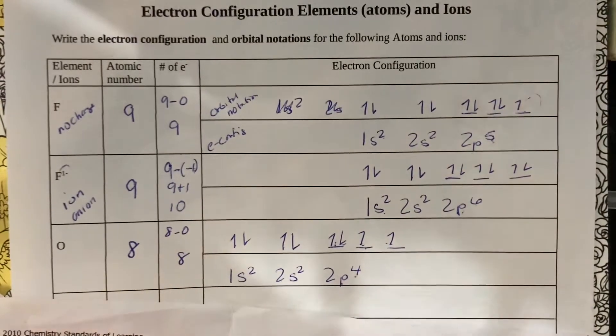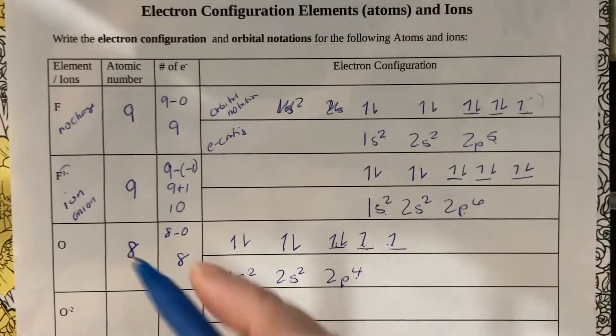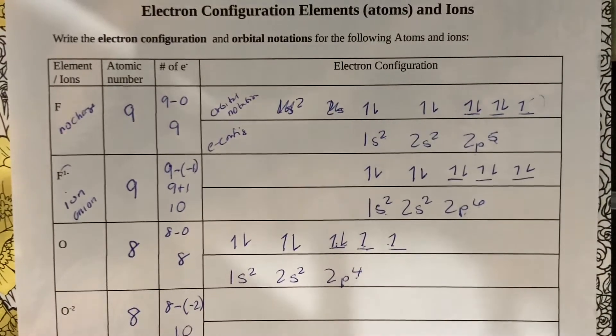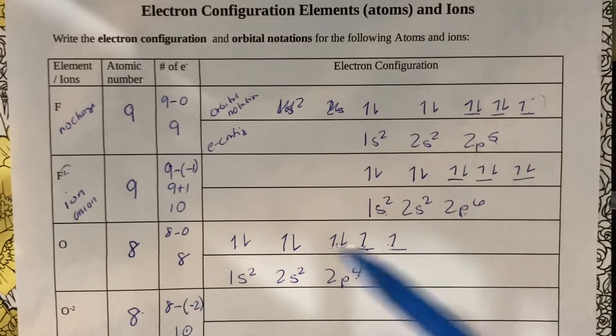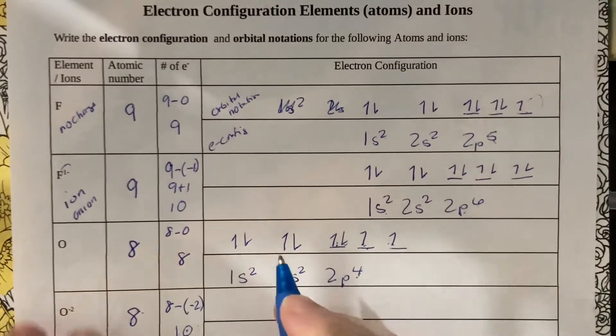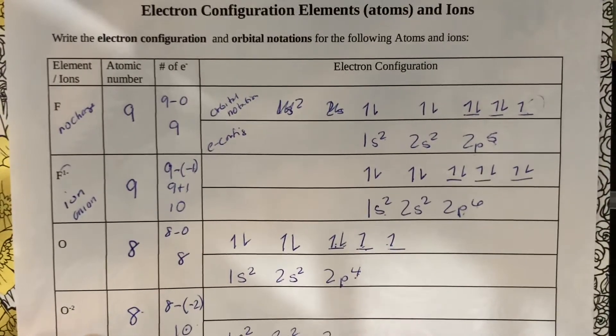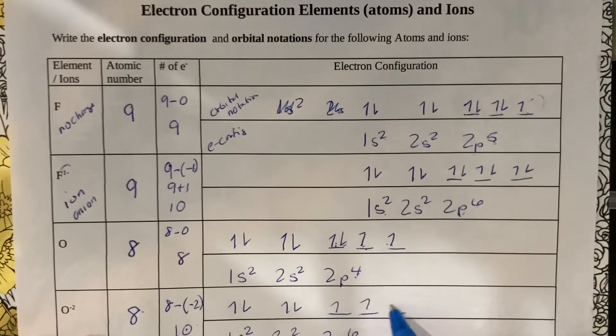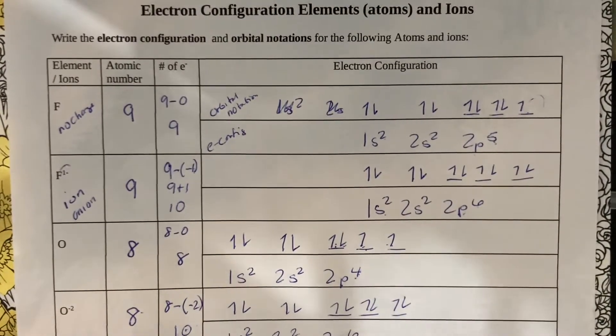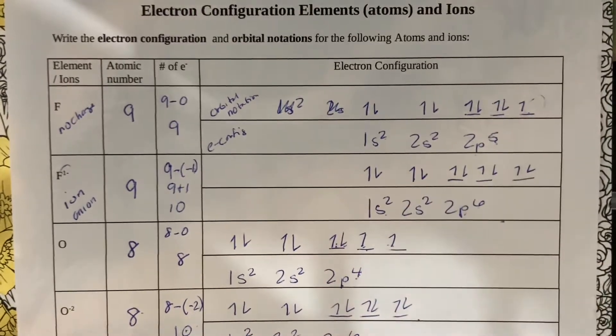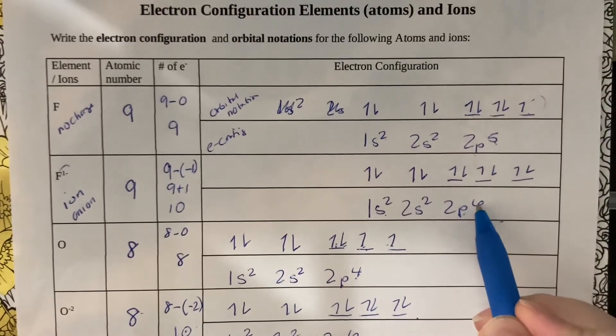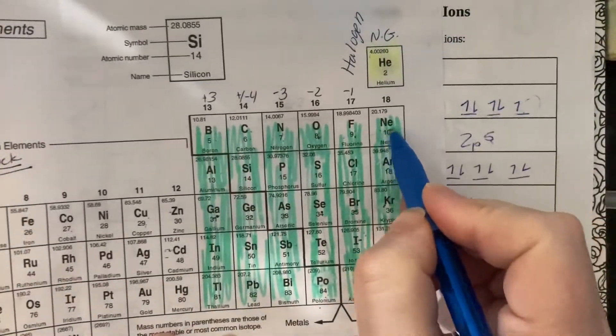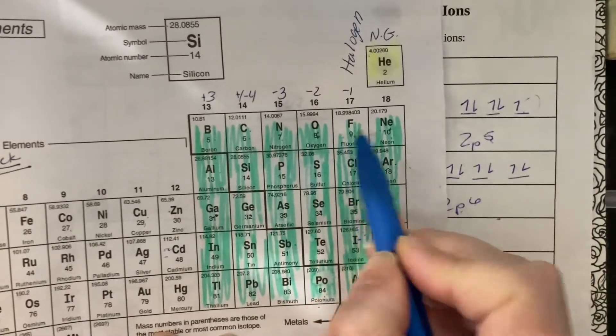Now the ion: again, eight is the atomic number, it stays the same. Electrons: eight minus a negative two, or ten. So we added two electrons, so we're just adding two electrons here on the last one: 1s² 2s² 2p⁶. Up down, up down, p gets split into three: up up up down down down. If you notice, the oxygen ion and the fluorine ion have the same electron configuration. Both have ten electrons. Who else has ten electrons? Neon! So both the oxygen ion and the fluorine ion are isoelectronic.